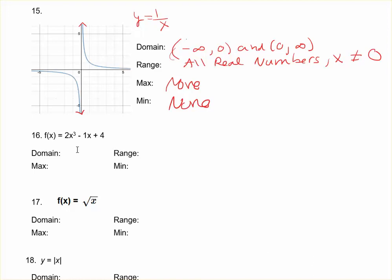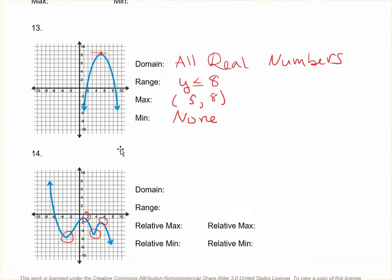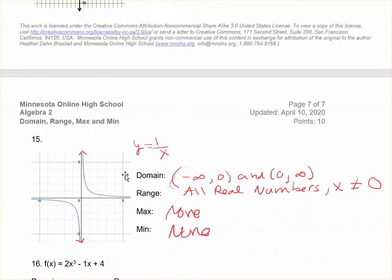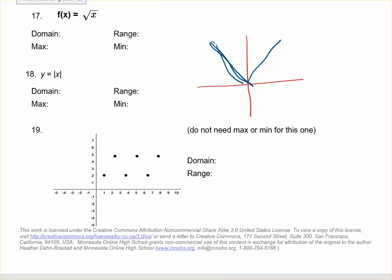In number sixteen, that's a cubic function — you can graph it and find that it might have a max and a min. For number seventeen, the square root of x looks similar to a prior example, so you can look back at that. Number eighteen is y equals the absolute value of x, which will be a v-shape with straight lines. The domain can be all real numbers, but the range will be limited. It won't have a max, but it will have an absolute minimum. In number nineteen, you just need to practice writing the domain and range of a discrete function from a graph — no max or min needed. Let me know if you have any questions. Have a great day!